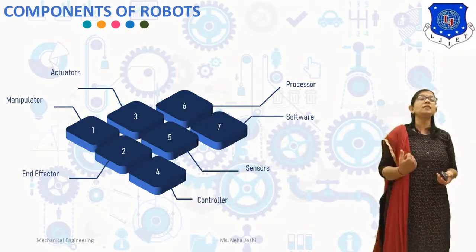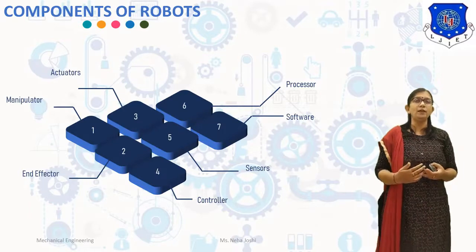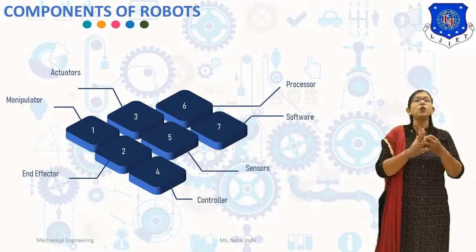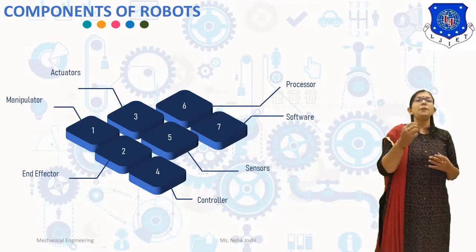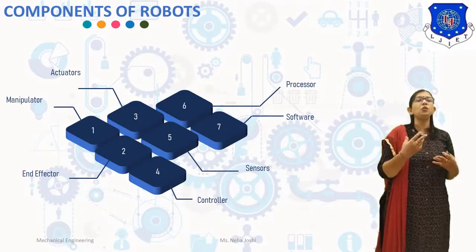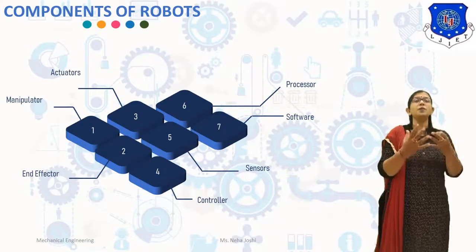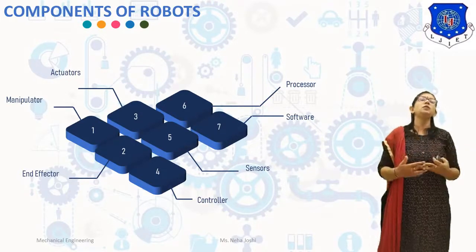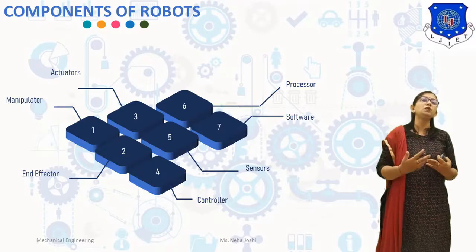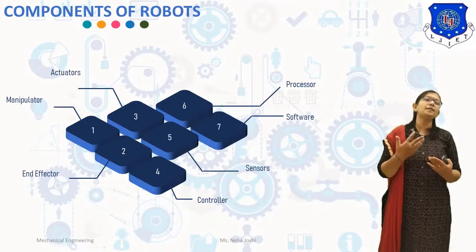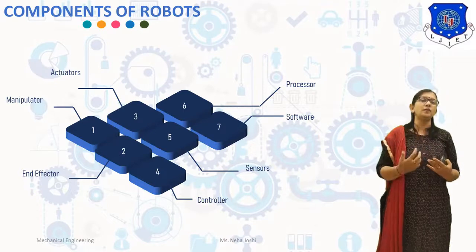The next component is the actuator. Actuators and drives are used to actuate the joints of the manipulator, producing rotary or linear motion between two links of a joint. In short, they are the muscles of the manipulator. Common actuators used in robotics are servo motors, stepper motors, pneumatic cylinders, and hydraulic cylinders.